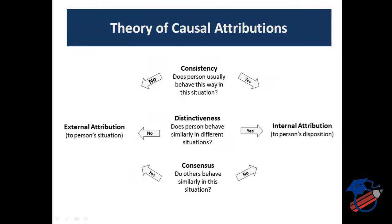The theory of causal attribution says that attribution can be made on the basis of consistency, distinctiveness, and consensus. Consistency is the behavior that a particular person usually shows — how do they generally behave in a particular situation? If the behavior is the same — that means consistent behavior — then it may be because of internal attribution, due to the person's own disposition and characteristics. But if there is some change in that consistent behavior, that may be because of external attribution. For example, a person who always reaches on time everywhere, but in some condition could not, that may be due to external reasons.